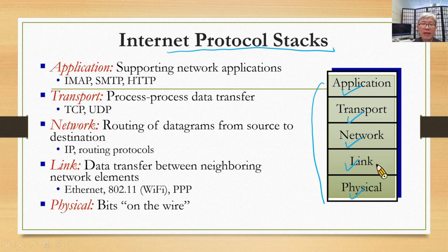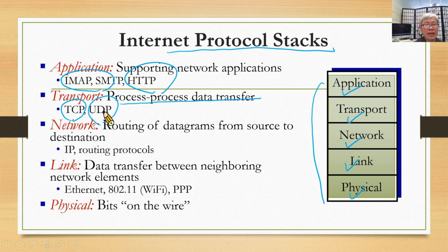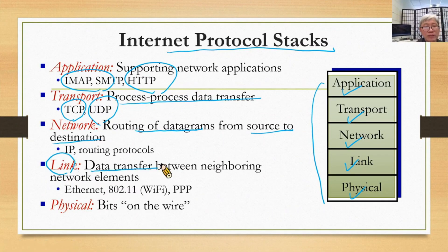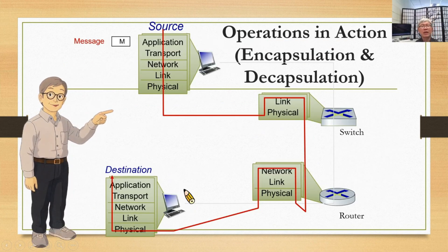For the application layer, we have email with corresponding protocols IMAP and SMTP, and web with the corresponding protocol HTTP. The transport layer cares about process-to-process data transfer, with protocols such as TCP and UDP. The network layer cares about routing of datagrams from source to destination, using the IP protocol and routing protocols. The link layer cares about data transfer between neighboring network elements, supporting technologies like Wi-Fi (IEEE 802.11). Finally, we have the physical layer, which cares about the bits on the wire.